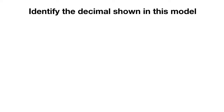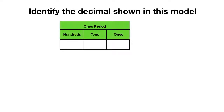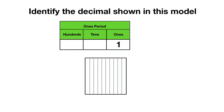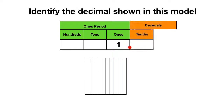Before we get to the model, let's refresh ourselves on decimals. We have our whole numbers like hundreds, tens, and ones. We could show one whole as the square. And in our video covering tenths, we discussed that if you cut this square into ten pieces, you have the decimal called tenths. Today we're going to go over that when you cut this square up even more, so that the one whole is cut up into one hundred pieces, now you're working with the decimal place value called hundredths.